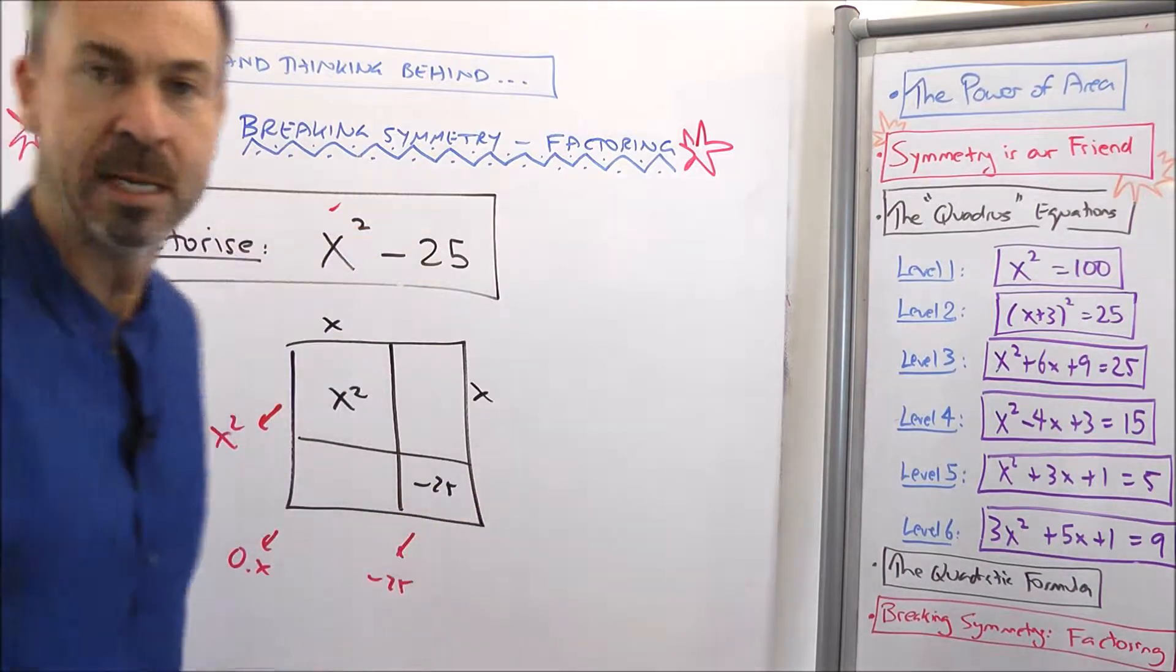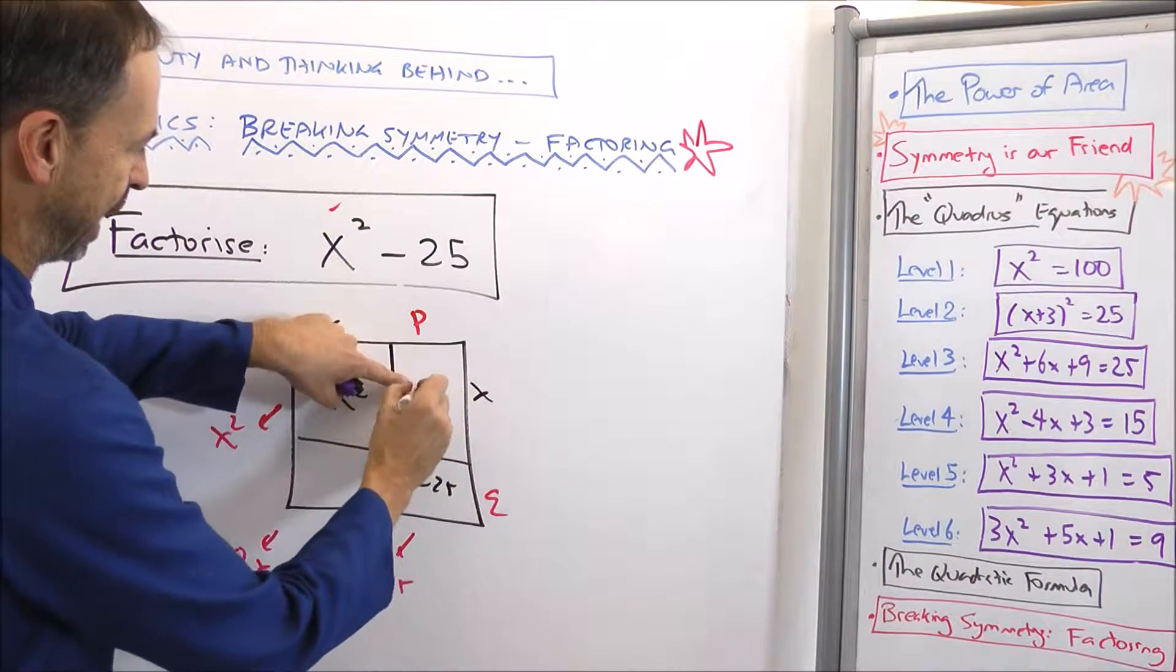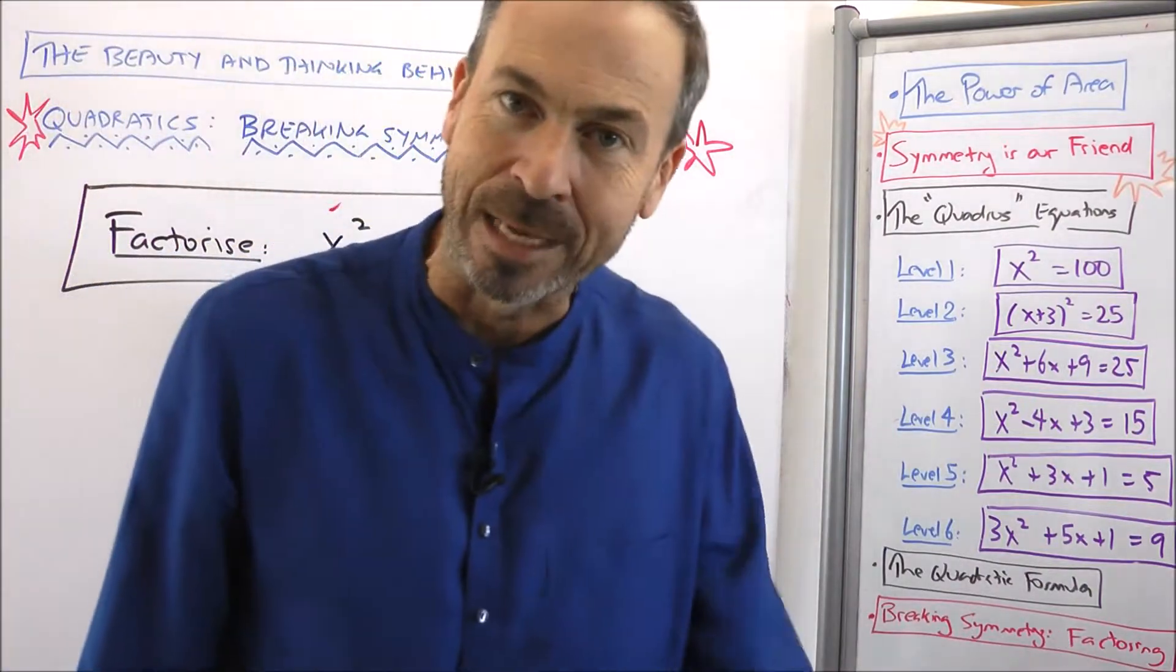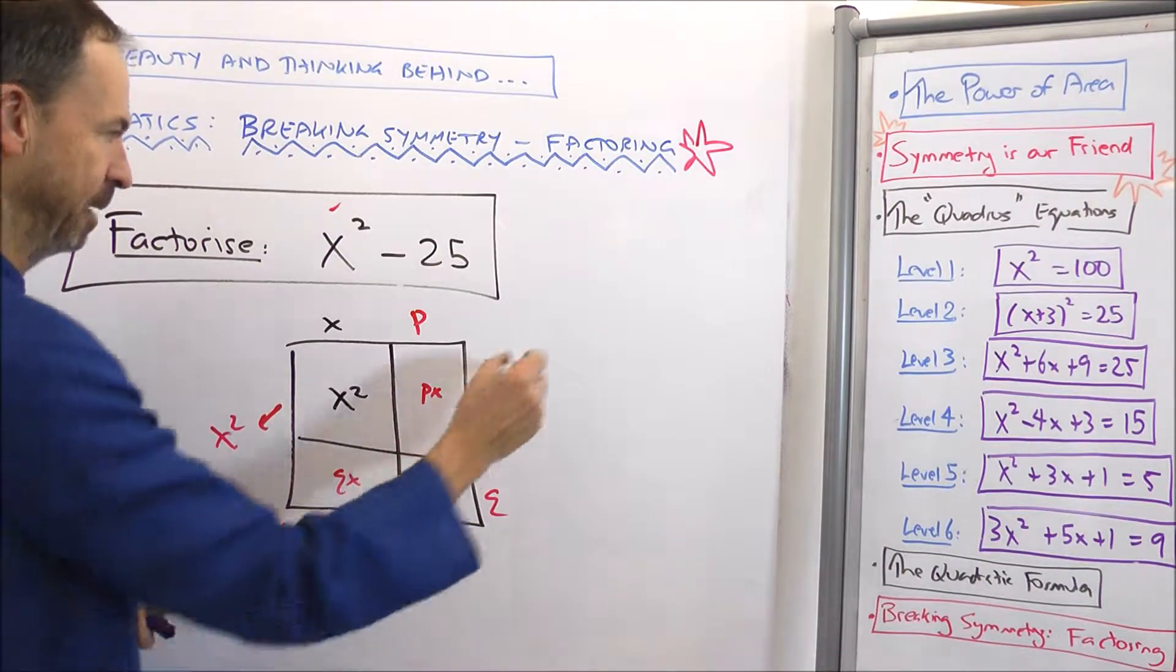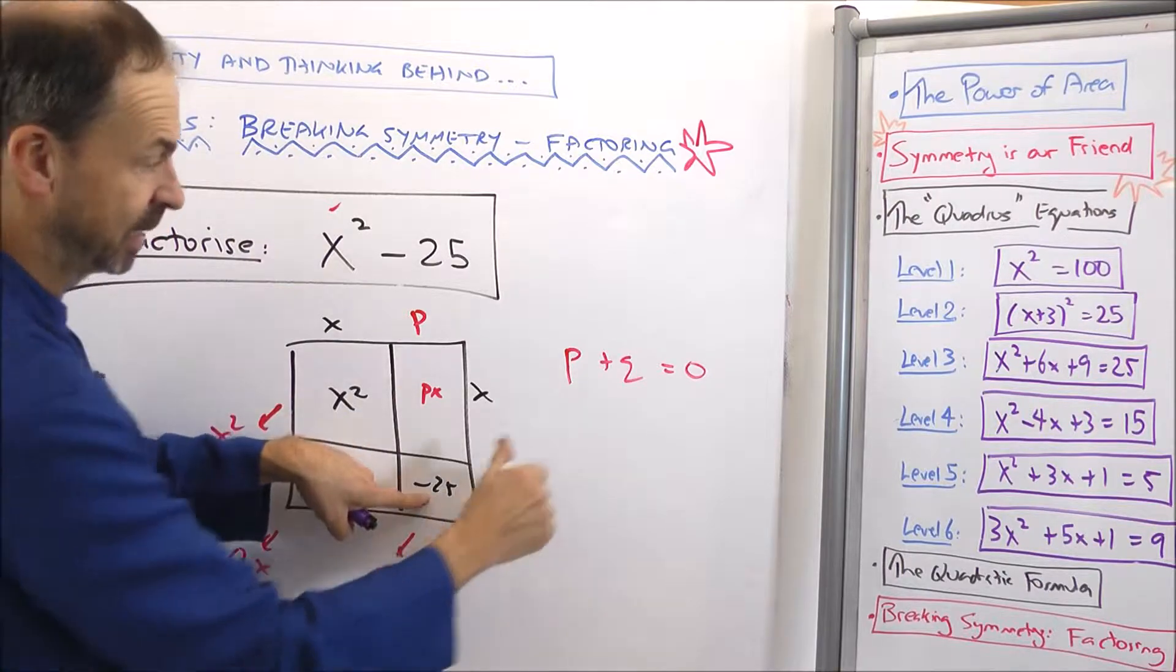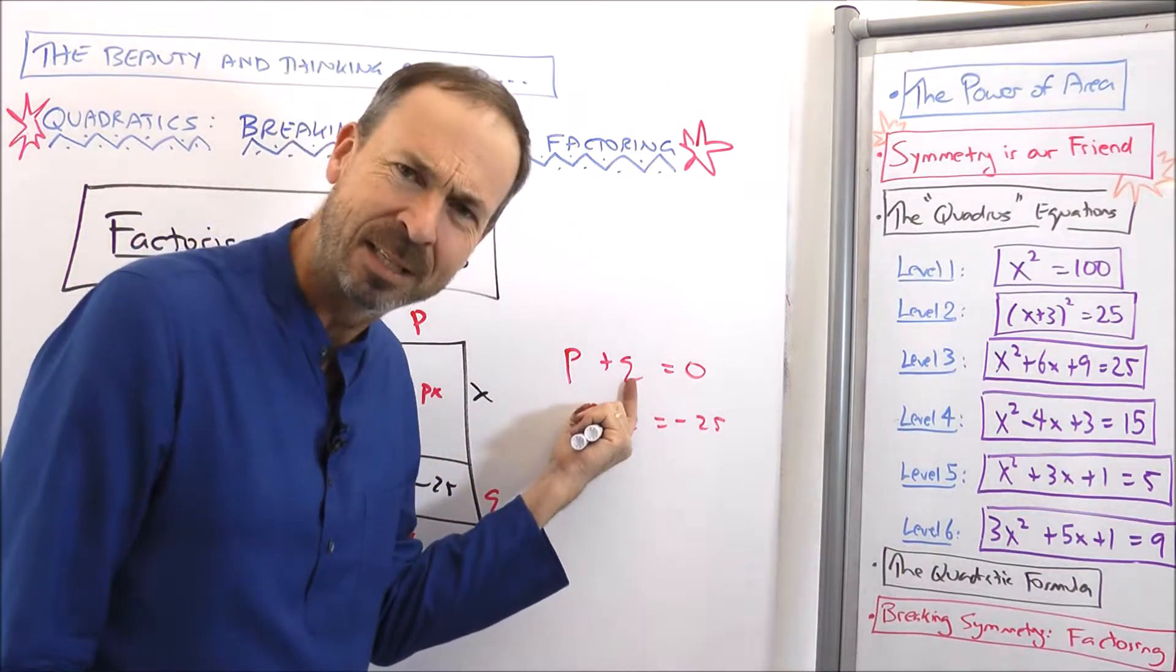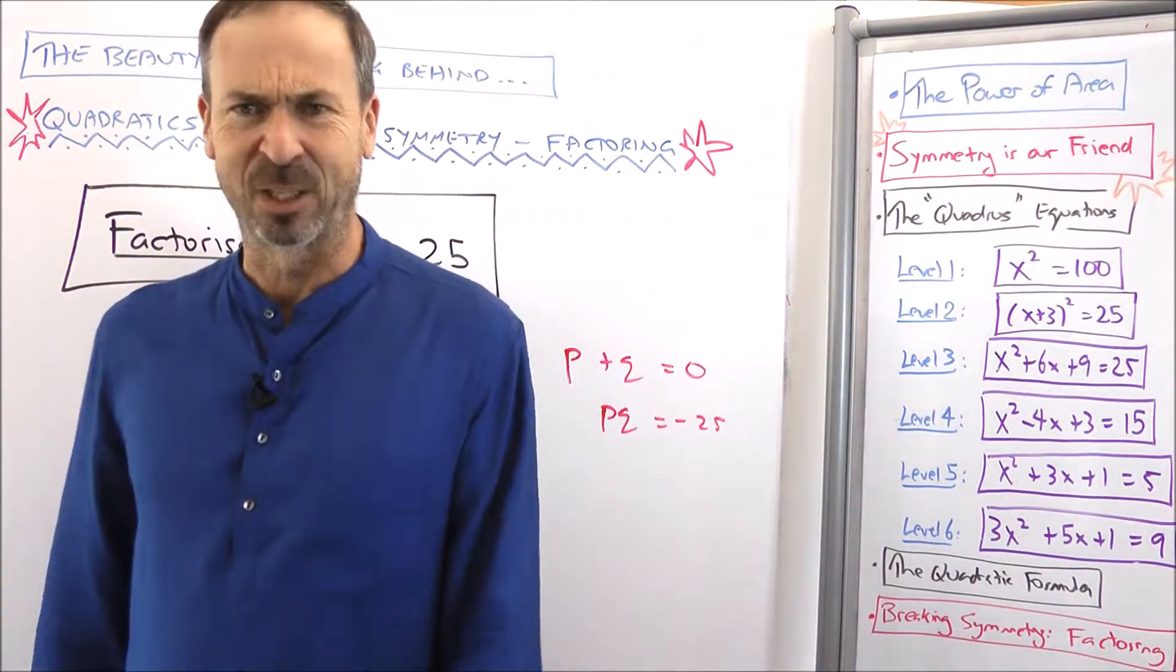Alright. But the question is what numbers do I put here? So let me just write down some general numbers. P and q. This will be p times x for that area. This will be q times x for that area. So I need px plus qx to add up to no x's. So the numbers I need have to have the property that p plus q is nothing. p + q adds up to 0. And p times q has to be negative 25. Alright. So this tells me the numbers basically have to be the same number but differ by sign. And they've got to multiply to be negative 25.